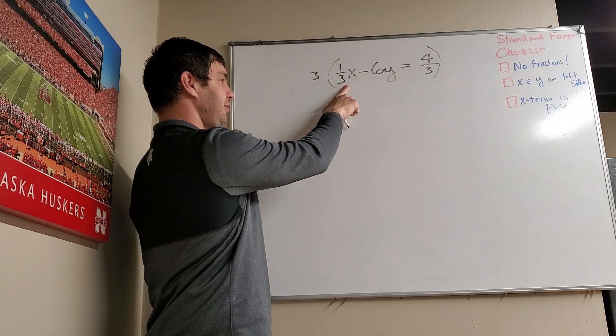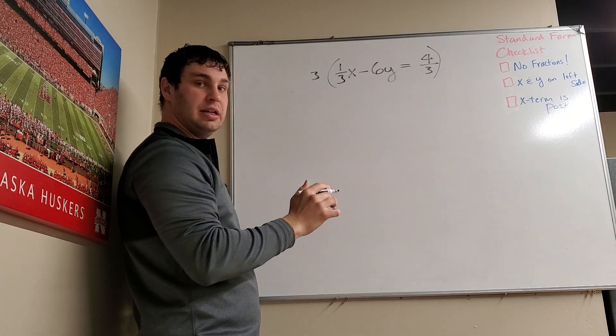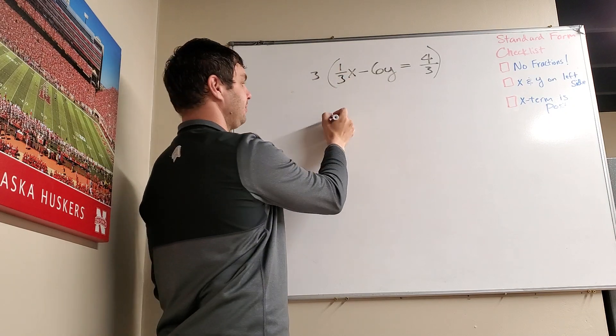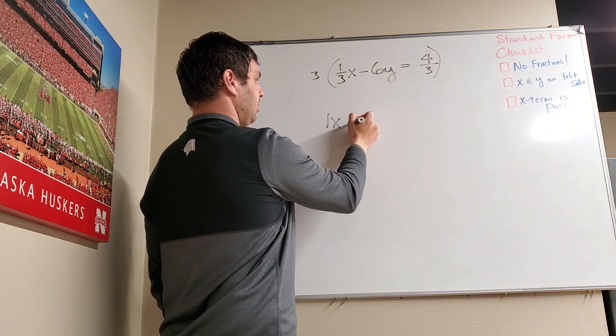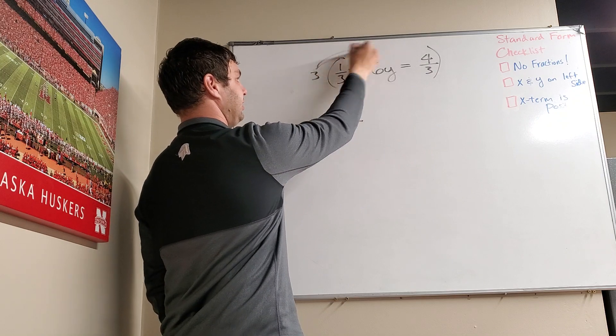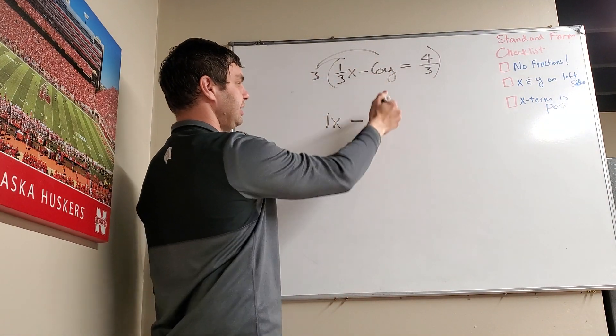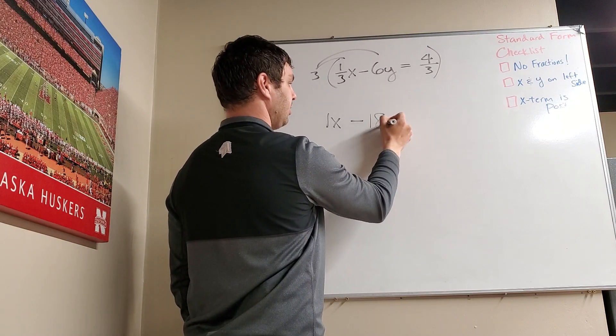Since I'm multiplying and dividing by 3 with those fractions, the 3s will cancel, and we're just left with the top, 1x. If I continue to distribute my 3 in, 3 times negative 6 is negative 18y.